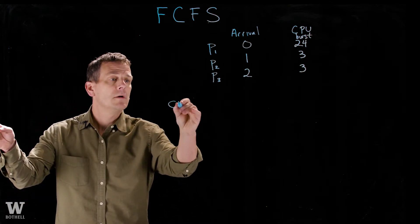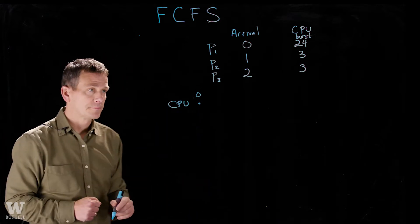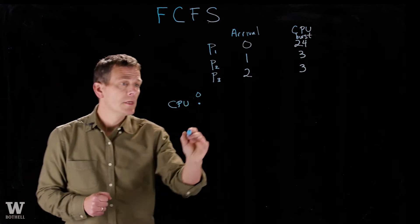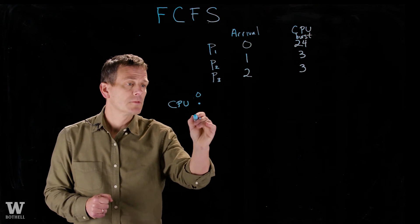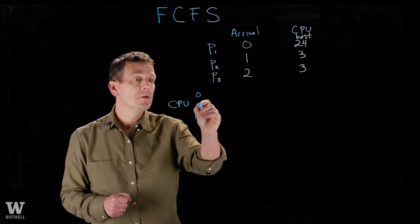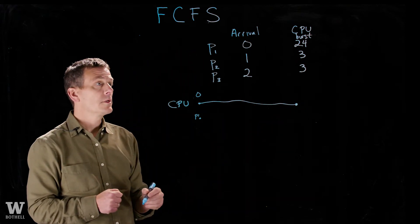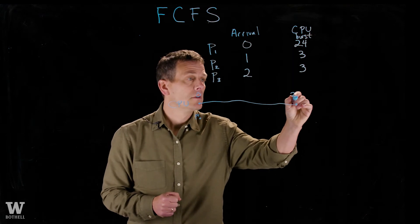So I'm going to draw a timeline of the CPU starting at time 0. Well, at time 0, P1 is in the system, because that's when it enters, and so it will get the CPU. And it will use the CPU all the way until P1 completes, which is at time 24.